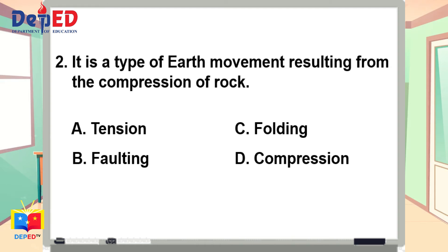Number two. It is a type of Earth movement resulting from the compression of rock. A. Tension. B. Faulting. C. Folding. Or letter D. Compression.